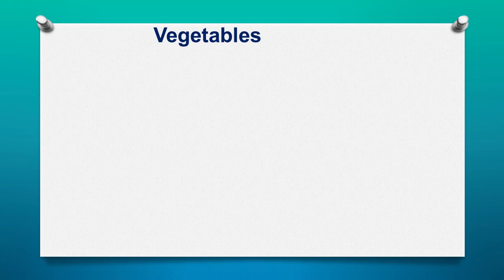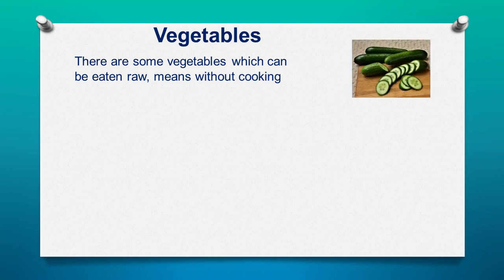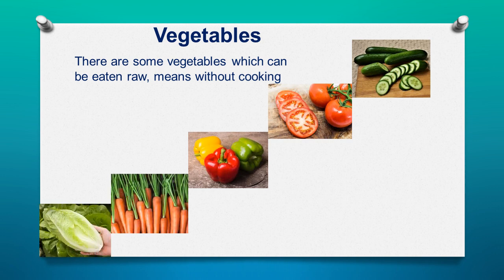Now let us learn about vegetables. There are some vegetables which can be eaten raw, that means they can be eaten without cooking. Can you name a few vegetables which can be eaten without cooking? They include tomatoes, bell peppers, carrots, lettuce, and many others. They are easy to digest and hence can be taken in raw form as well.